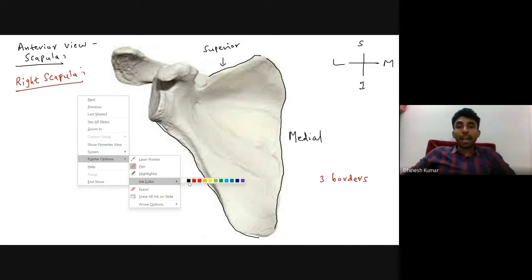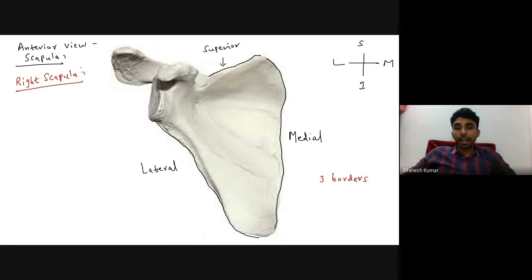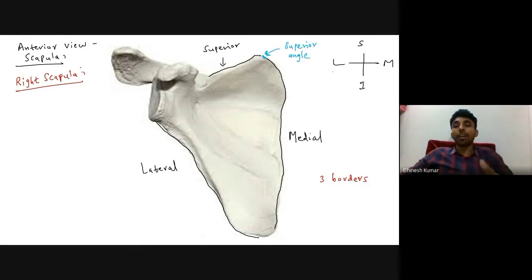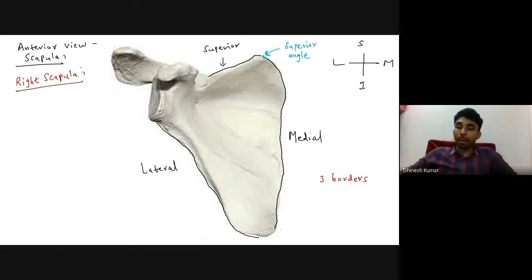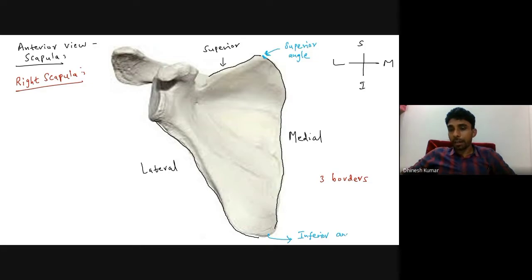Now, the three angles of the scapula. This pointed area is called the superior angle of the scapula — angle means a pointed area. The superior angle is the meeting point of the superior border and medial border. And the inferior angle of the scapula is the meeting point of the medial and lateral borders.